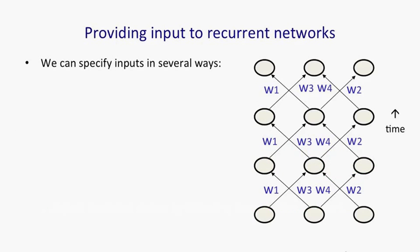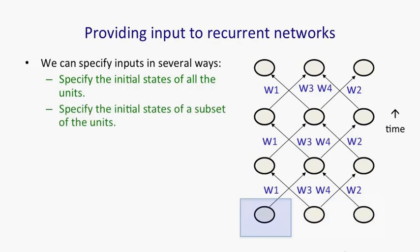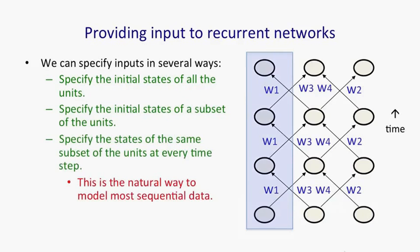There's many ways in which we can provide the input to a recurrent neural net. We could, for example, specify the initial state of all the units. That's the most natural thing to do when we think of a recurrent net like a feedforward net with constrained weights. We could specify the initial state of just a subset of the units, or we could specify the states at every time step of a subset of the units, and that's probably the most natural way to input sequential data.